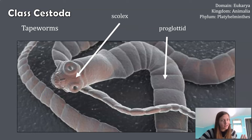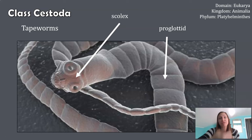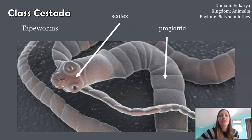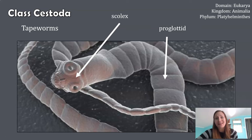Most tapeworms, but not all, will attach somewhere in the intestines of an organism. And at this attachment site is where the tapeworm is going to get all of its nutrients from its host organism. The majority of the rest of a tapeworm is made up of individual units called proglottids. Inside a proglottid is essentially testes and ovaries — the ability to create egg and sperm for self-fertilization.